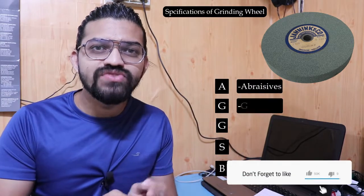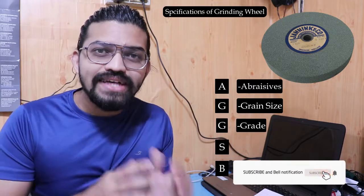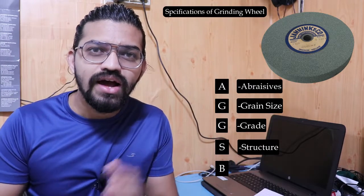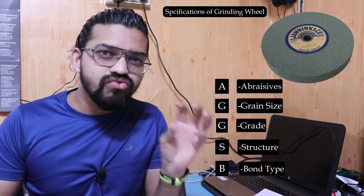It is very important to select the correct material for the grinding wheel. The specifications of the grinding wheel depend on certain factors, abbreviated as AGSB: A for Abrasive, G for Grain size, G for Grade, S for Structure, and B for Bond — the type of bond.